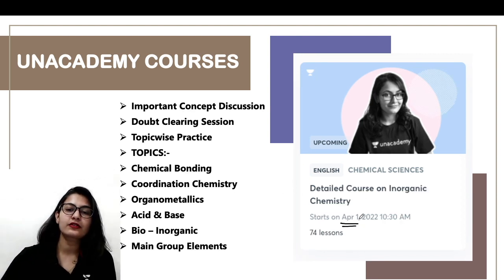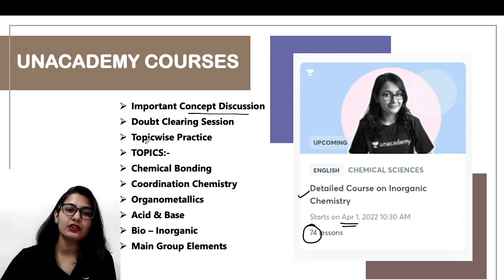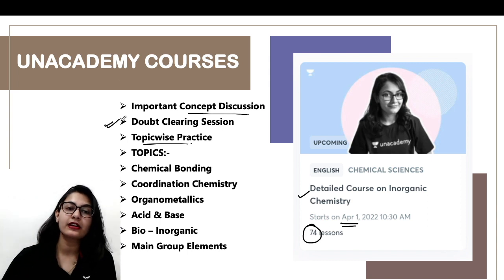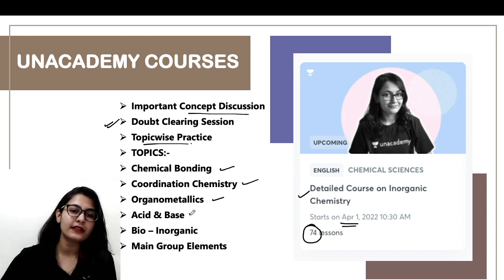This is a complete full-length course with 74 lessons. What you're getting includes important concept discussion, topic-wise practice, and doubt clearing sessions. The topics we'll be discussing include chemical bonding, coordination chemistry, organometallics, acid and base, and bio-inorganic chemistry.